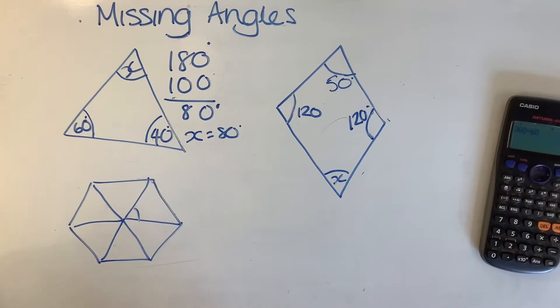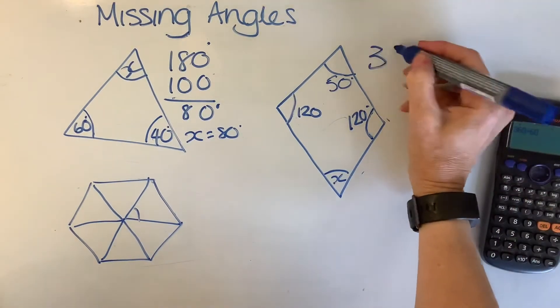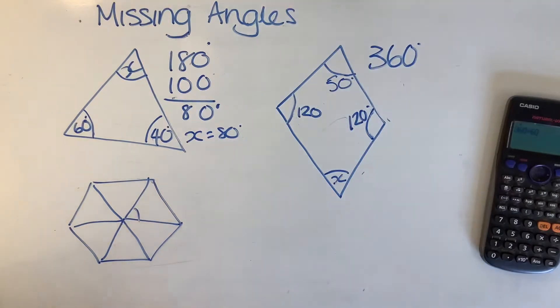Next kind of question is a four-sided shape. So the fact that you need to know about the internal angles of a four-sided shape is that they add up to 360 degrees. So we do the same again. We add up the internal angles that we do know, take them away from 360.